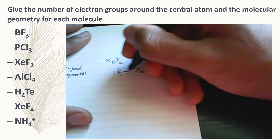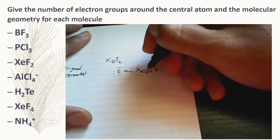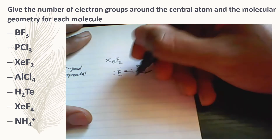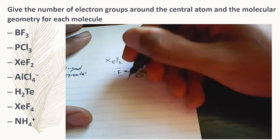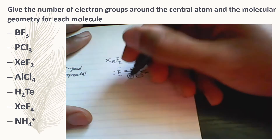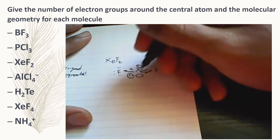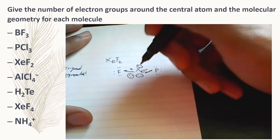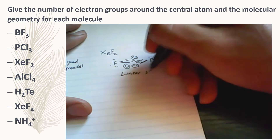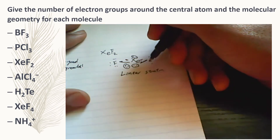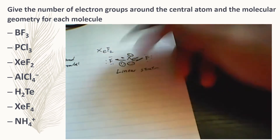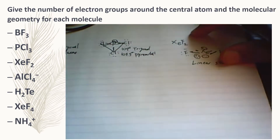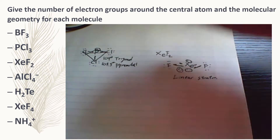If you can use d orbitals, you can move electrons to the d orbital and create more bonds, so xenon does not have to obey the octet rule. After drawing the structure, xenon ends up with ten electrons and three lone pairs. If you go to the chart of molecular geometry, you'll see that this molecule is a linear structure. The angle is going to be 180 degrees, though it's slightly distorted because of the lone pairs of electrons.